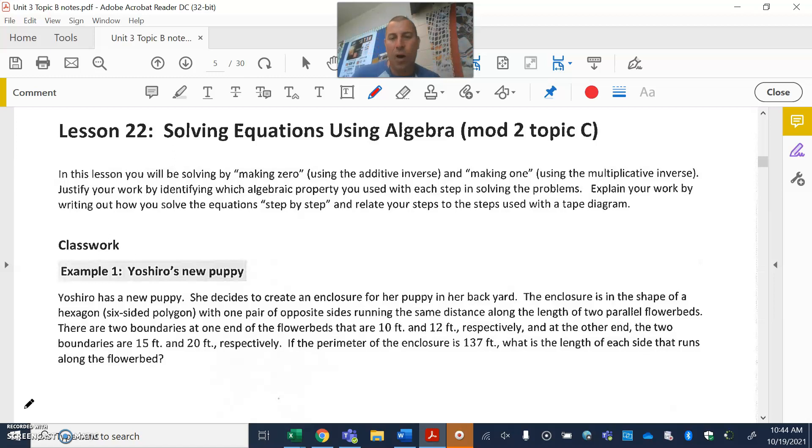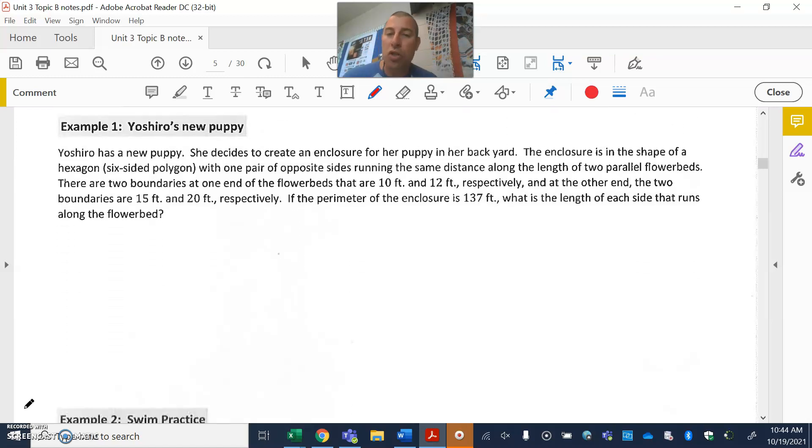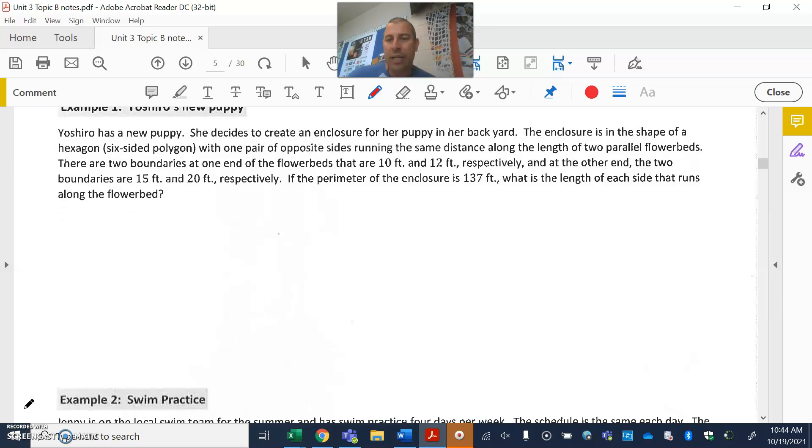Here we go. Yoshiro's new puppy. She decided to create an enclosure, a crate, kind of like a cage but not necessarily with a ceiling. It's more of an enclosure for a puppy in her backyard. The enclosure is in the shape of a hexagon.